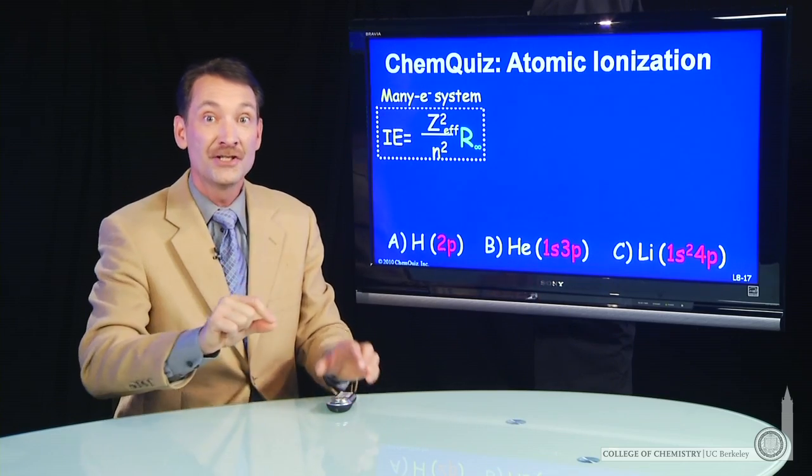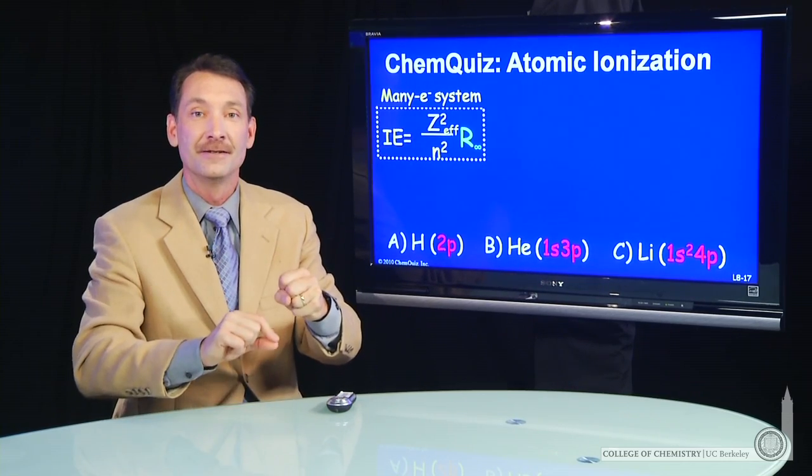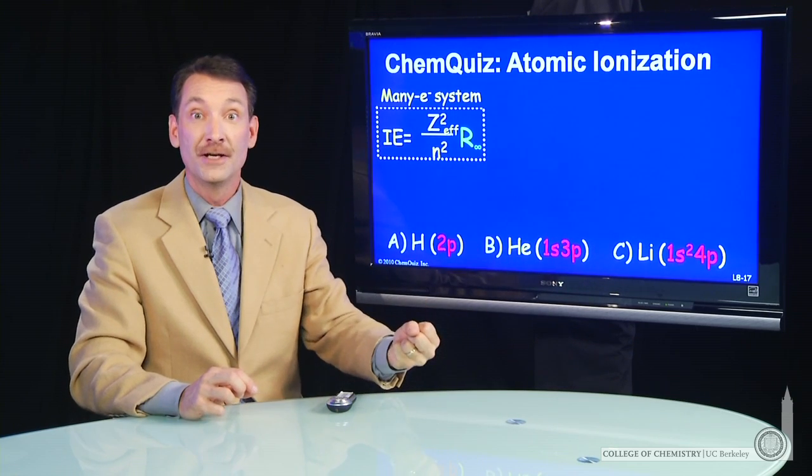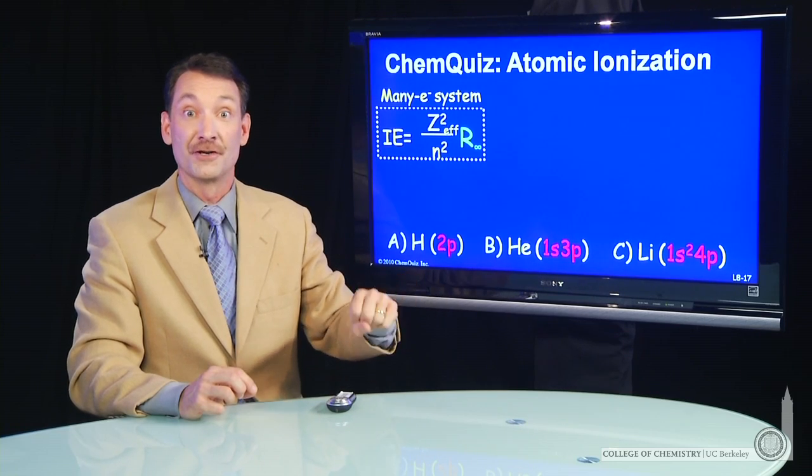The minus 1 of the electron shields almost plus 1 on the nucleus. So this outer 3p electron, rather than seeing the full two positive charges in the nucleus, sees more like one positive charge in the nucleus.